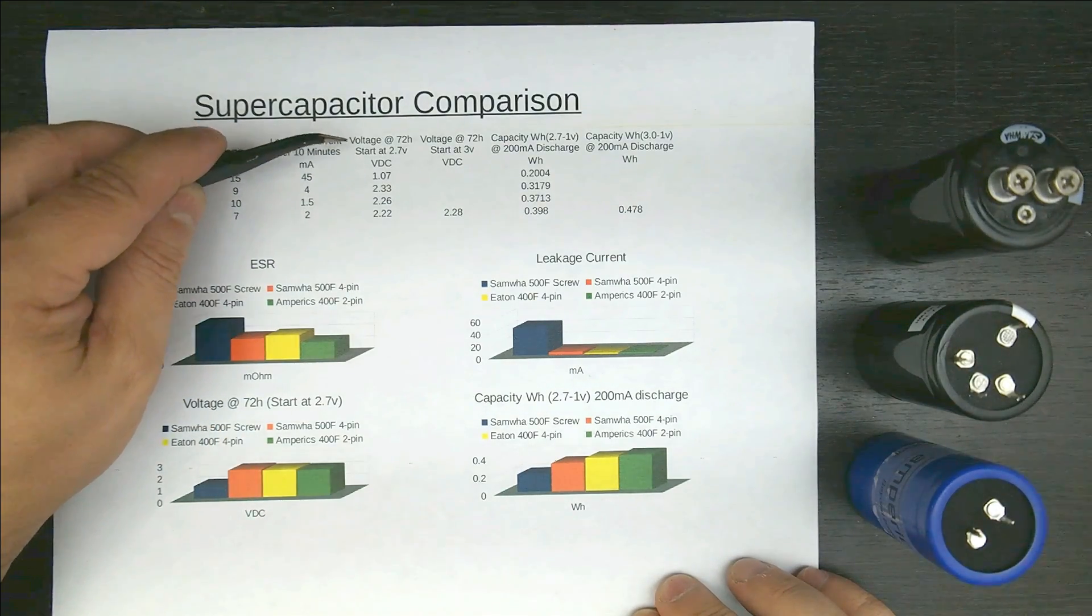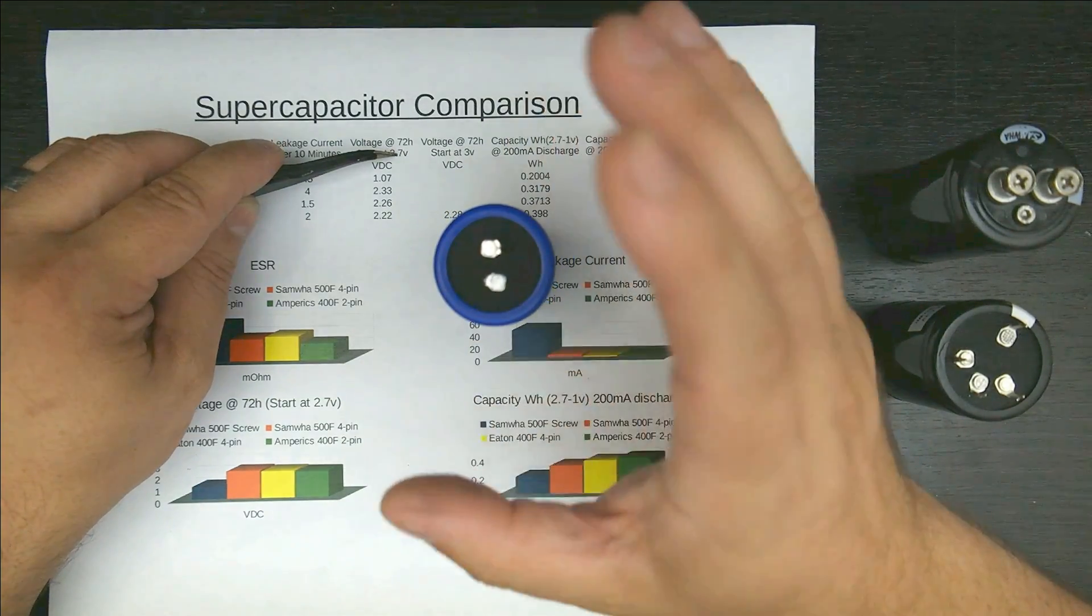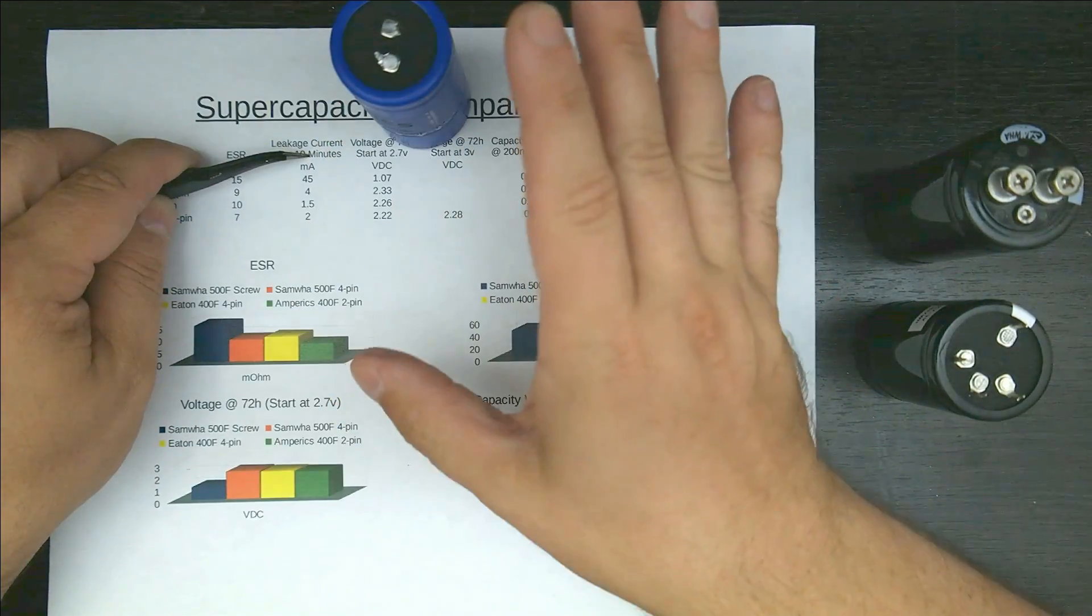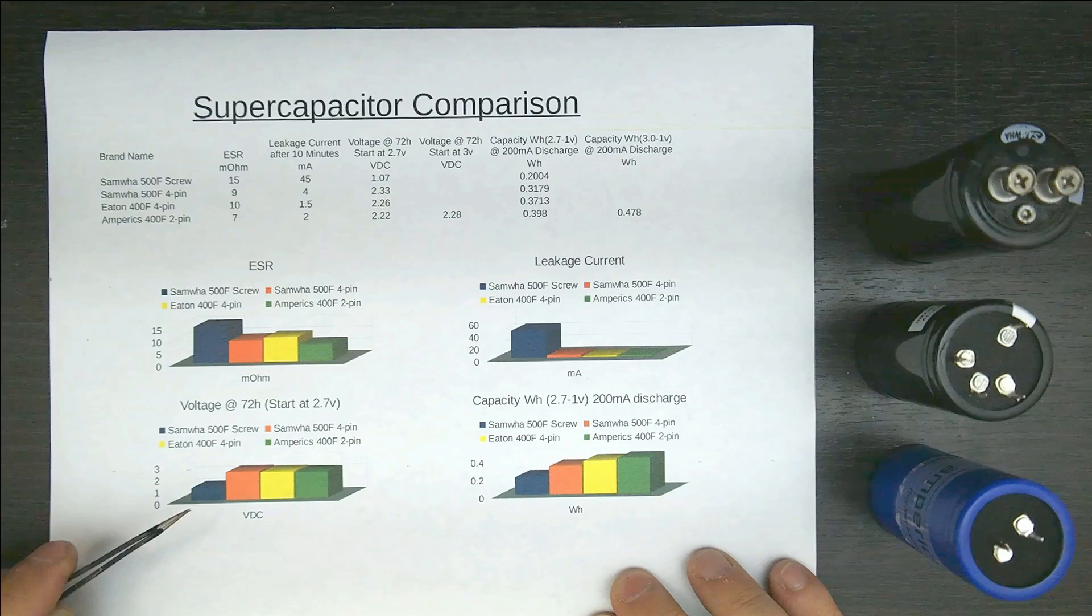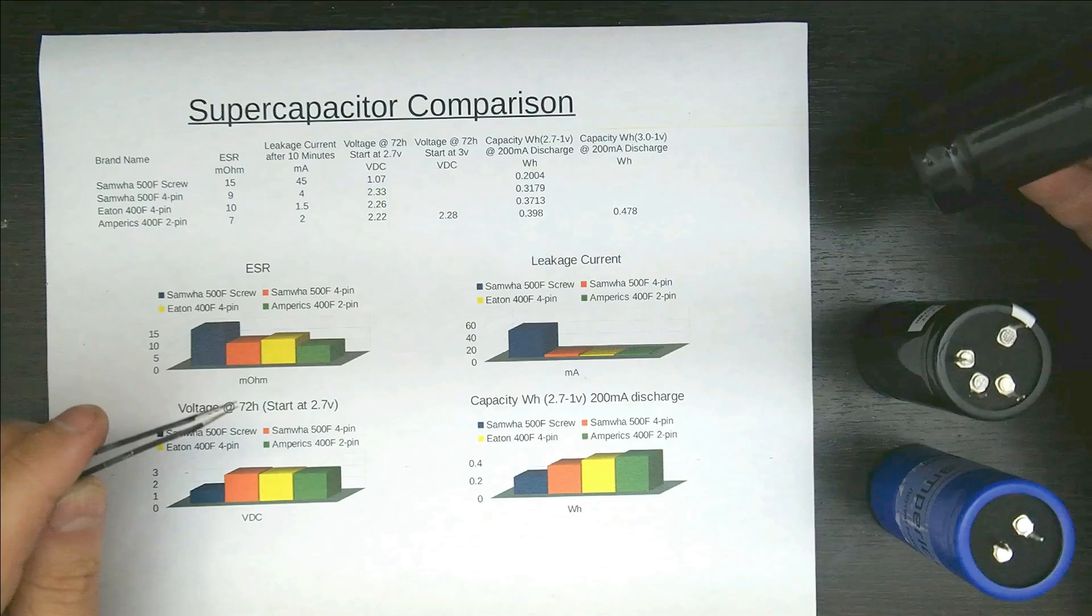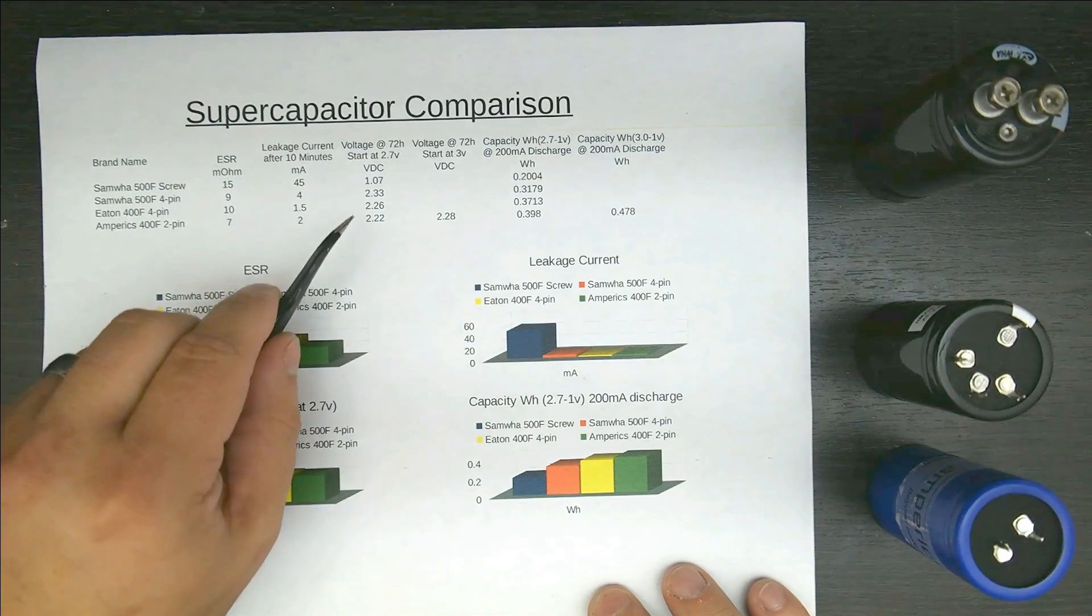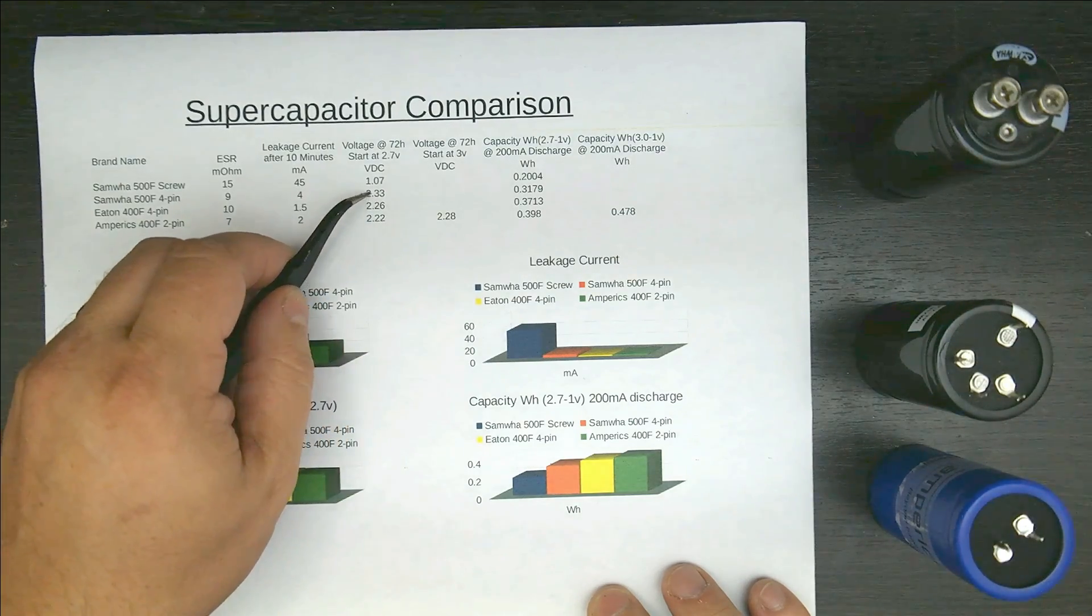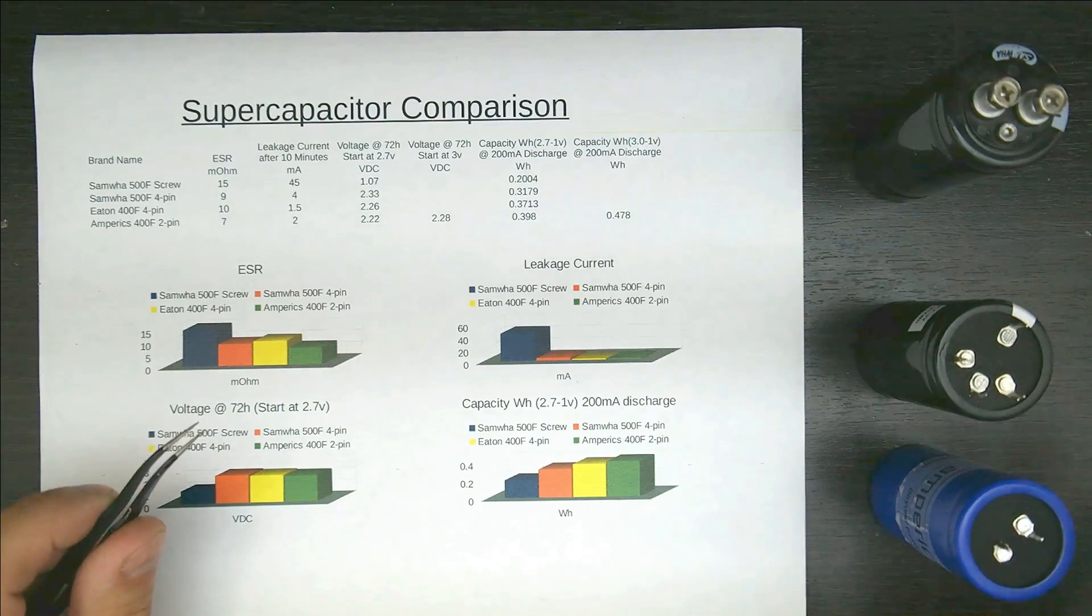Third column that's interesting is voltage at 72 hours starting at 2.7 volts. This is charging the capacitors up to 2.7 volts, waiting until it finally hits its leakage current point, and then just unplugging it and putting it to the side for 72 hours and see what the voltage is when it finally settles down. So that is down here. And you can see there's the crap cap again. We're all the way down to 1.07 volts. This thing's not even good for a paperweight. I'm serious. The rest of them came out really good. 2.33 for the Samoa 4-pin, Eton 400 2.26, and Amprix 2.22. They're all within one-tenth of a volt of each other. So that was really good. The long-term leakage actually calmed down on all three of them.